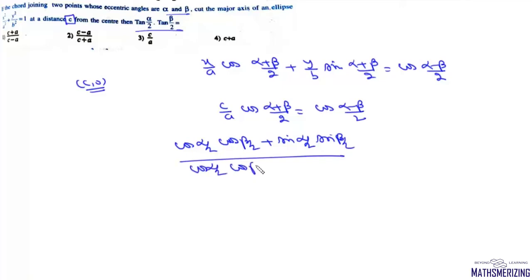cos(beta/2) - sin(alpha/2)sin(beta/2), and this equals c/a. Now we need to find the value of tan(alpha/2) and tan(beta/2), so